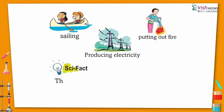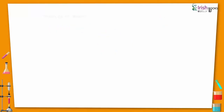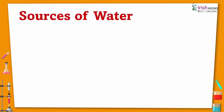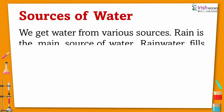There is very limited drinking water on the earth. Sources of water: We get water from various sources. Rain is the main source of water.